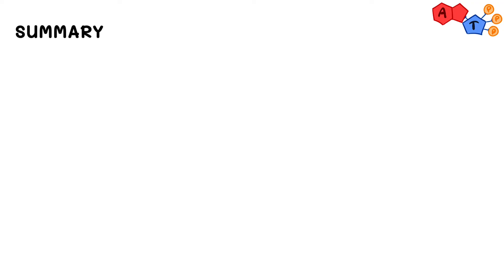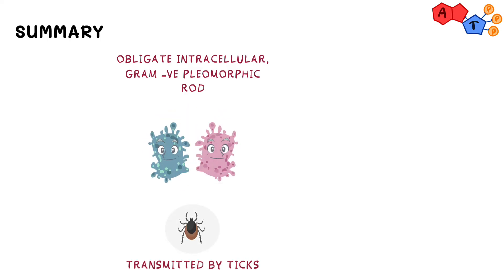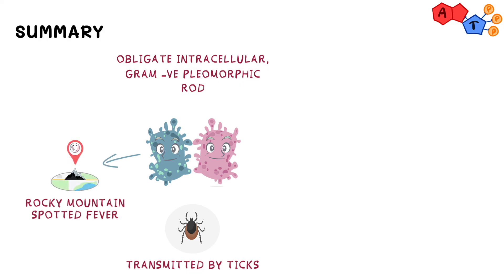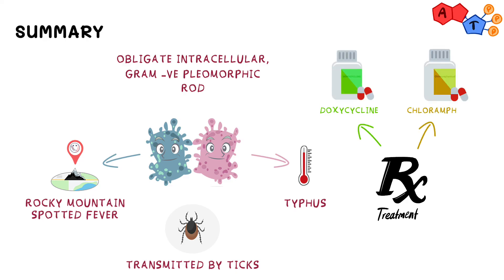Alright, to sum up: Rickettsia is an obligately intracellular gram-negative pleomorphic rod. Rickettsia is transmitted by ticks. Rickettsia species can cause Rocky Mountain spotted fever, which is caused by Rickettsia rickettsii, and typhus, which is caused by Rickettsia typhi and Rickettsia prowazekii. Finally, rickettsia can be treated with doxycycline or chloramphenicol.